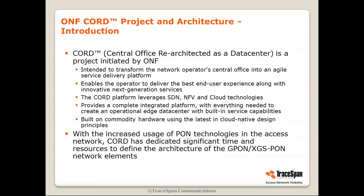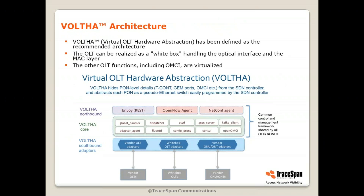It provides a complete integrated platform with everything needed to create an operational edge data center with built-in service capabilities, built on commodity hardware using the latest cloud-native design principles. Since GPON or PON is being more and more used as the access network, CORD has dedicated significant time and resources to define the architecture of the GPON and XGS-PON network elements. This was depicted in the Volta architecture. Volta stands for Virtualized OLT Hardware Abstraction, and has been defined as the recommended architecture for PON.